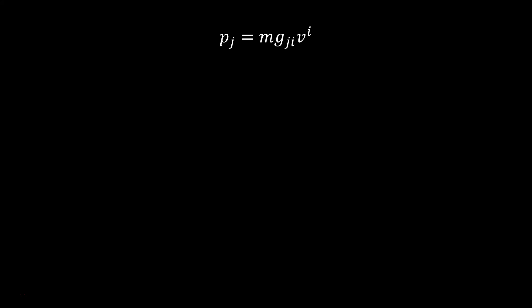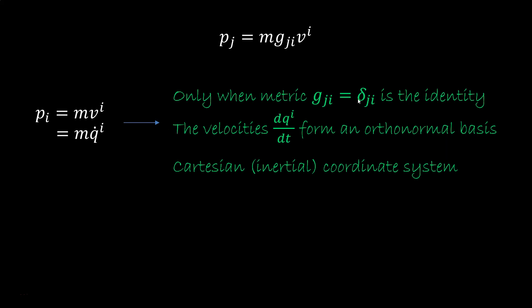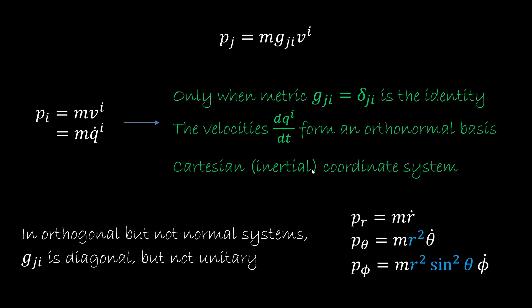Now that we got rid of the dependency on the magnetic field, we still have the dependency on g. In principle, we'd like to say that p equals mv, mqdot. This is the case only if g is the identity matrix. The velocity needs to form an orthonormal basis, which only happens in Cartesian coordinates in an inertial frame. For example, we may have an orthogonal system, like a spherical coordinate, where g is diagonal but not the identity. The conjugate momentum along r would be mr dot, which is mass times velocity. But in the angular directions, we are going to get an r squared. Along those directions, conjugate momentum is really angular momentum, so it is not simply mq dot.